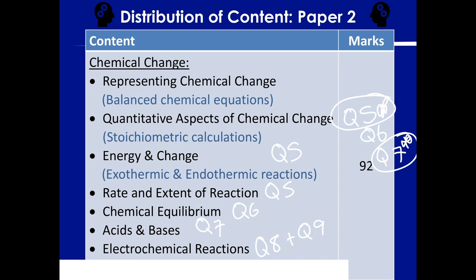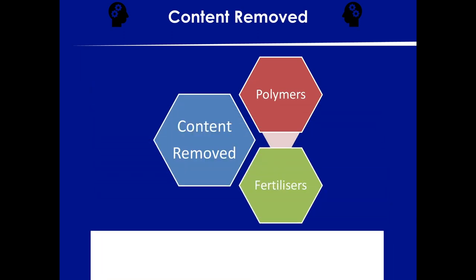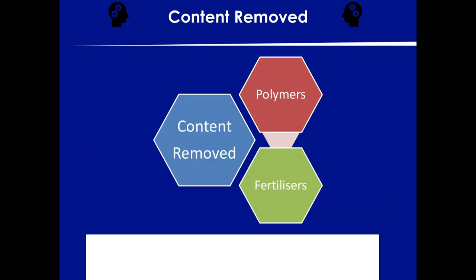Your paper will always consist of nine questions. Question 1 is multiple choice. Questions 2, 3, and 4 are organic. Questions 5 through 9 will be reaction rates, equilibrium, acids and bases, galvanic, and electrolytic. The topics removed due to COVID restrictions are fertilizers — which used to be Question 10 — and polymers, which was part of organic. Neither is part of your syllabus anymore.